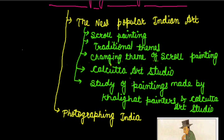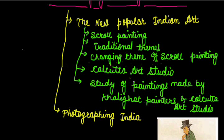As I have told you earlier, the painting on a long roll of paper that could be rolled up is known as scroll painting. In our previous videos we have seen some phases of the new popular Indian art, like the theme used by scroll painters and three-dimensional scroll painting. In the 19th century, scroll painters used mythological themes.